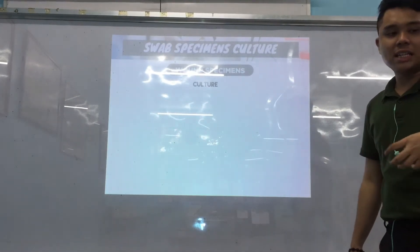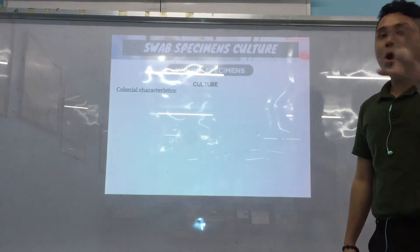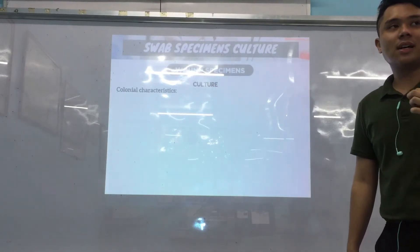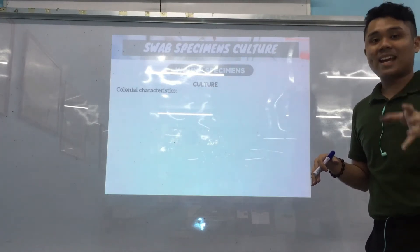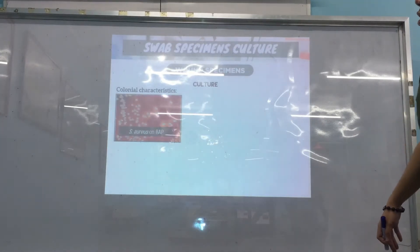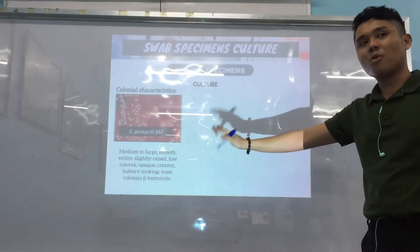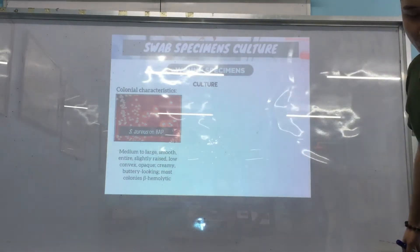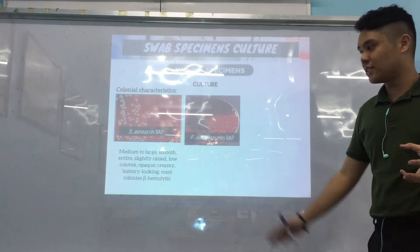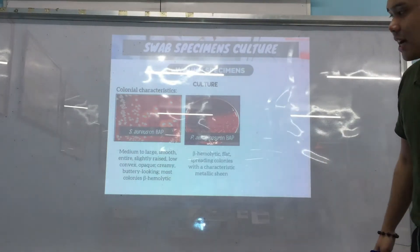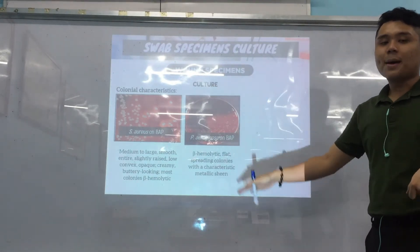Now, the colonial characteristics of some pathogens encountered in wound specimens. Many are caused by Staphylococcus aureus — on BAP, colonies are creamy and buttery-looking, and most are beta-hemolytic. Another cause is Pseudomonas aeruginosa — on BAP, it has a characteristic metallic sheen. Remember: metallic sheen on BAP is Pseudomonas aeruginosa; greenish metallic sheen on EMB is E. coli — different media.